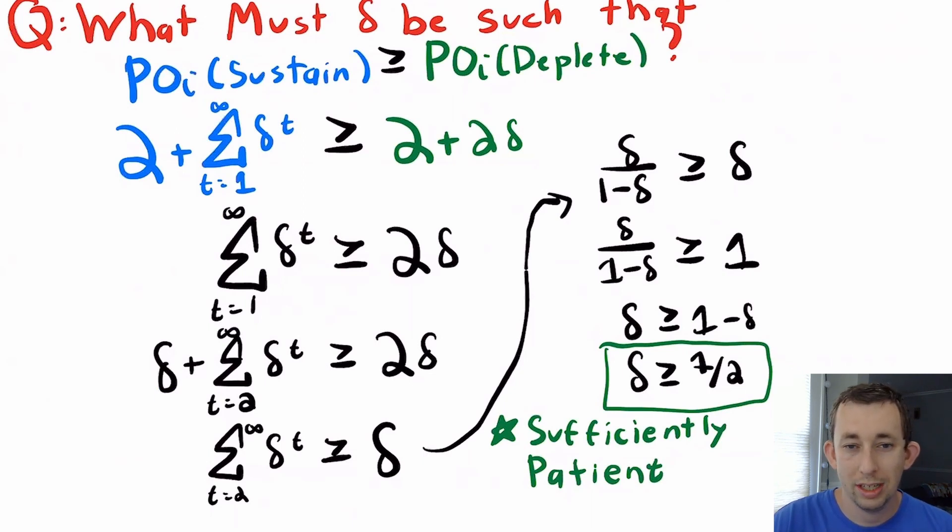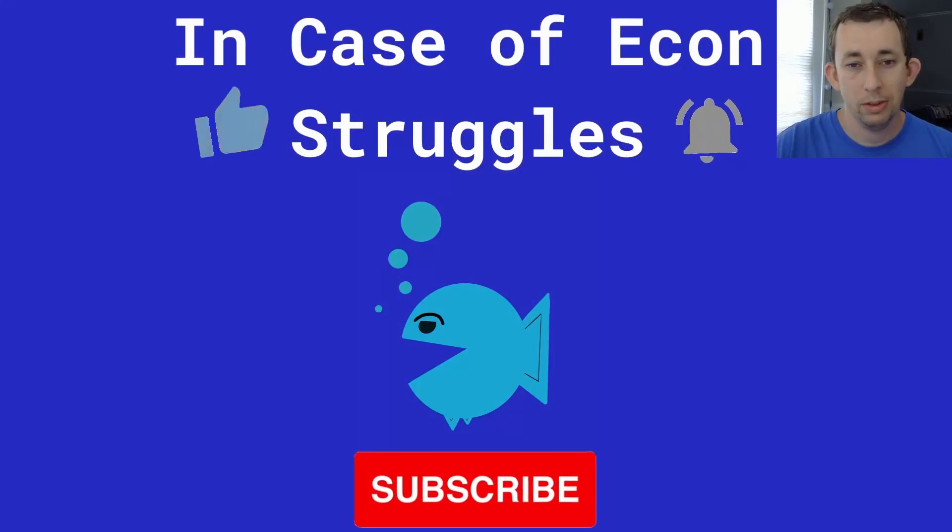So hopefully what this does is it gives you a little better idea and an example of how to think through a game theory problem before you solve it. But it also gives you another example of a solved game theory question and some subgame perfect Nash equilibrium. If this was helpful, make sure to like and subscribe and we will see you next time for another case of econ struggles.